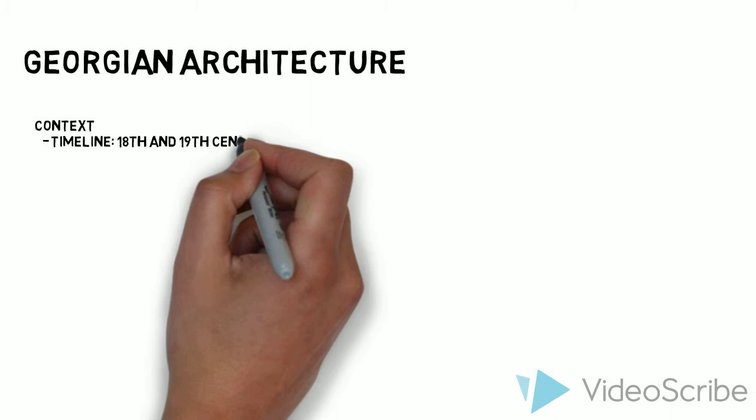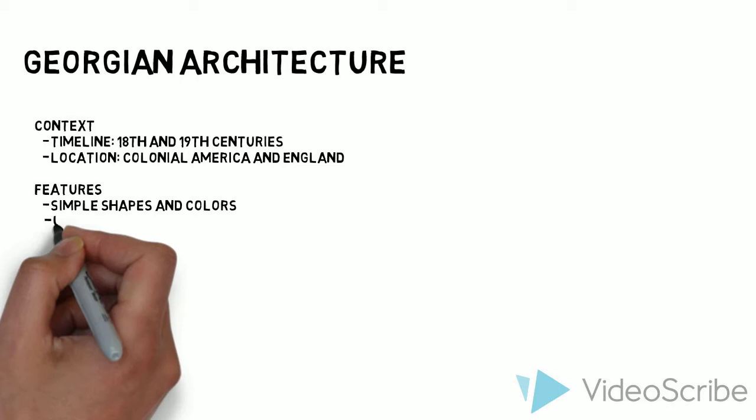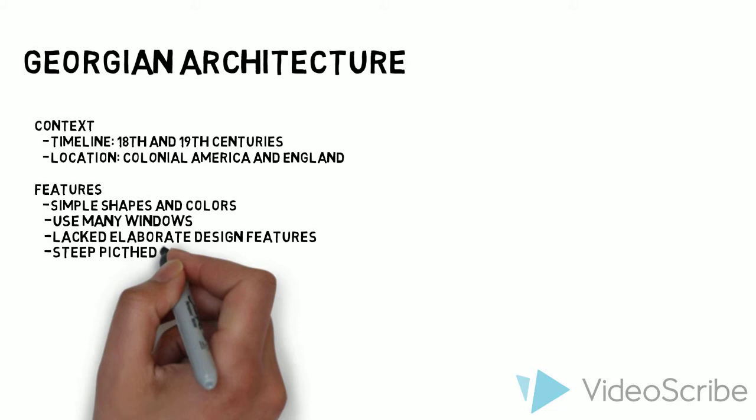Now we will move to Georgian architecture, named after the first four British monarchs of the House of Hanover: George I, II, III, and IV. Its prevalence reigned between the 18th and 19th century in colonial America and Europe. It features simple shapes and colors and uses plenty of windows. It lacked decorated details, but you will notice lots of symmetry. Lastly, there was a transition from flat to steep-pitched rooftops.